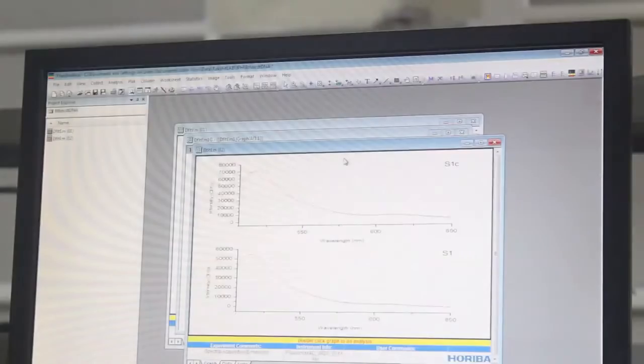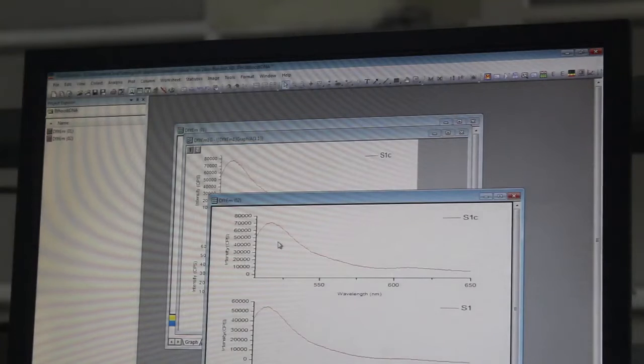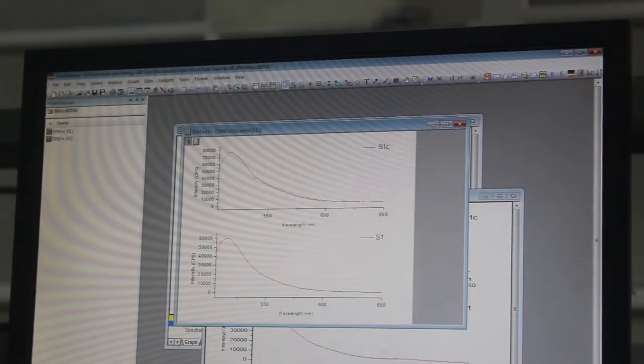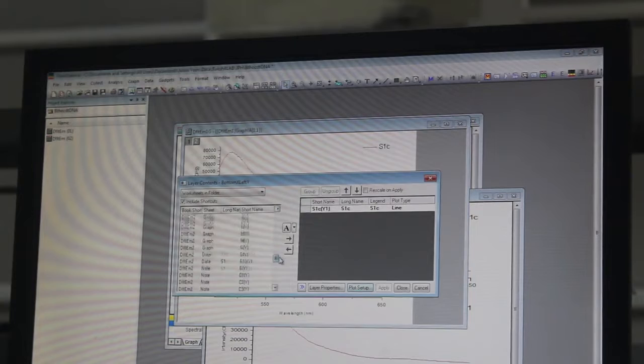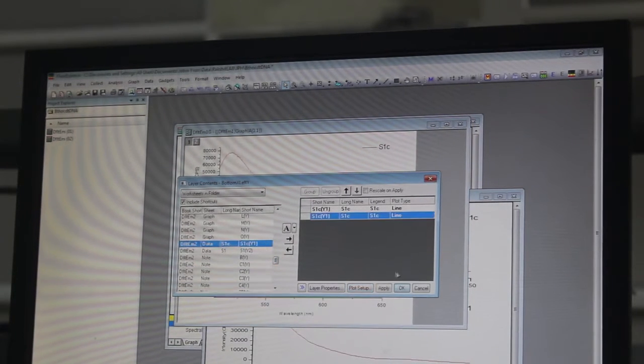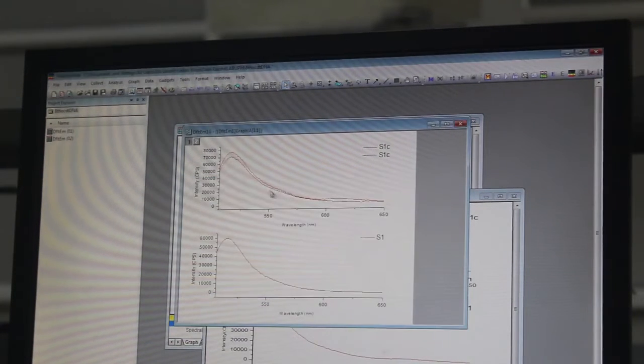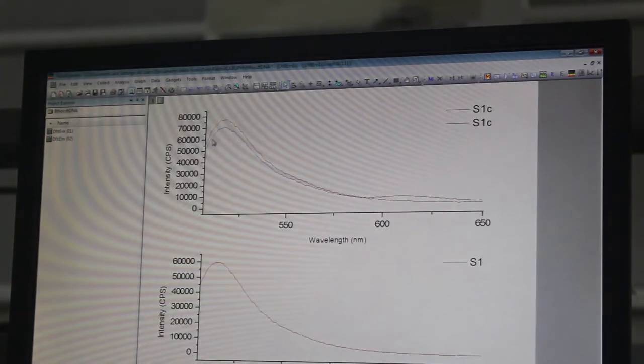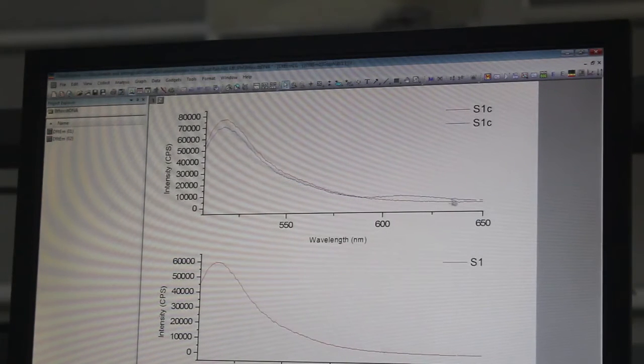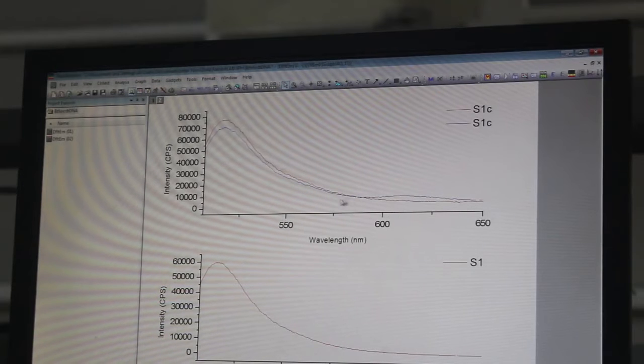We click on run. We overlay this spectra with our previously collected spectra. We go to layer contents and take the S1 corrected towards this side and overlay both of them. If you see, the donor intensity has decreased and acceptor intensity has appeared. That means both the DNA has hybridized and FRET is happening.